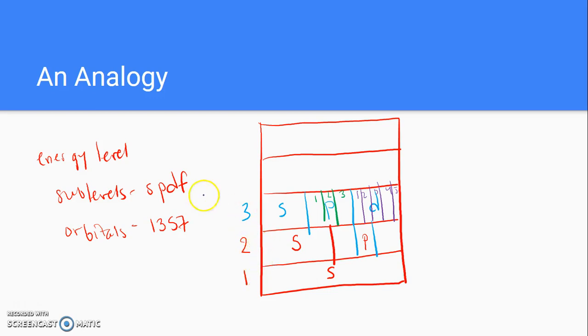Remember that energy levels are broken down into sublevels, and the sublevels are S, P, D, and F. The sublevels are broken down into orbitals, and there's either 1, 3, 5, or 7 orbitals, depending upon which sublevel it's in. They match up directly like this: S has one orbital, the P sublevel has 3, the D has 5, and the F has 7.